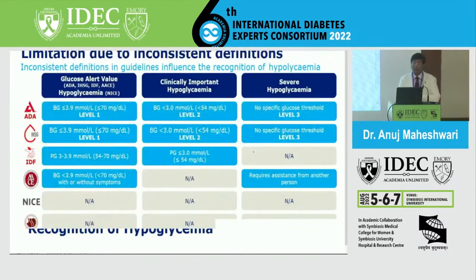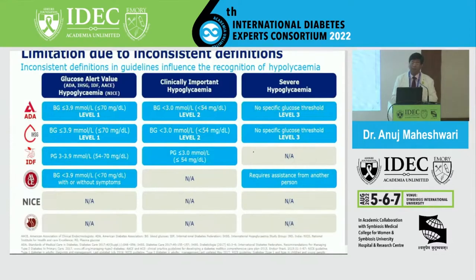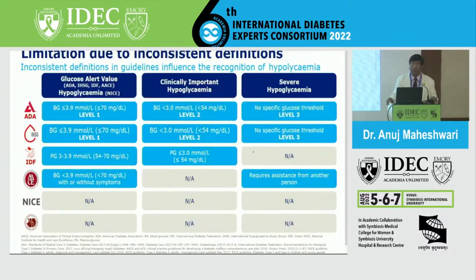There are certain limitations because of which we do not identify hypoglycemia cases as they occur. Lack of clarity in the definition is one such issue. Many organizations giving definitions of hypoglycemia do not have a consensus. For example, ADA says blood glucose less than 70 mg/dL is a glucose alert value, clinically important hypoglycemia is less than 54 mg/dL, and for severe hypoglycemia they give no specific glucose threshold. The same is supported by IHSG.